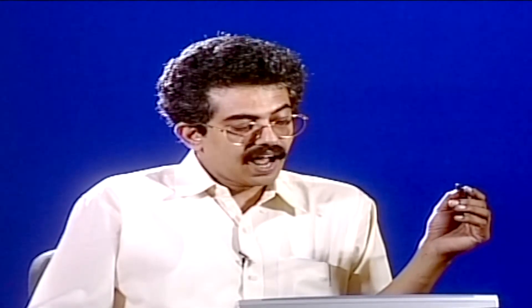For that reason — that dynamic models in practice cannot be obtained very accurately — it is nearly always very difficult to get dynamic models accurately. Therefore, we must combine a feedback controller along with the feedforward controller, so that the control error due to modeling inaccuracies will be corrected in the feedback loop slowly, but eventually they will be corrected. You will get a lot of disturbance correcting action very fast, and whatever errors remain will eventually also be corrected.